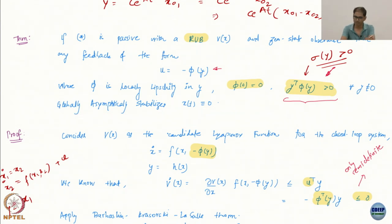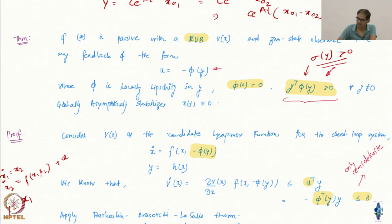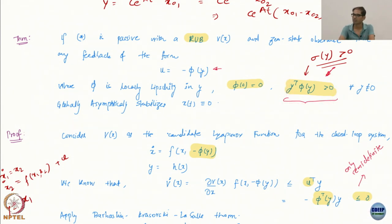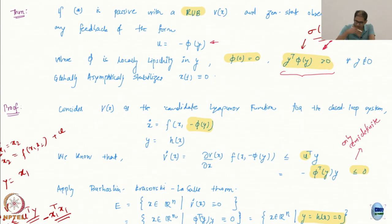How do you construct the feedback? You basically declare the control to be minus φ(y) with these properties: Lipschitz, zero at zero, and y^T φ(y) is positive definite — strictly positive for nonzero y. This is a very nice and really useful result.